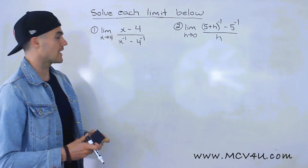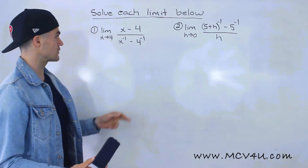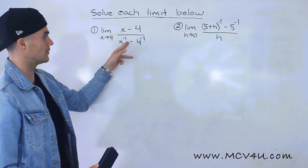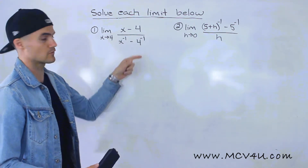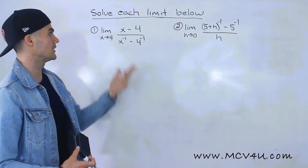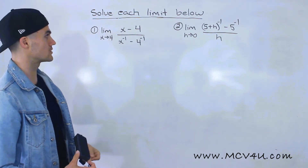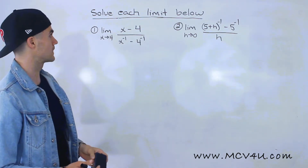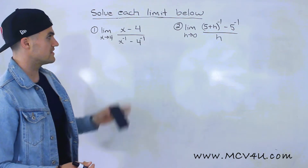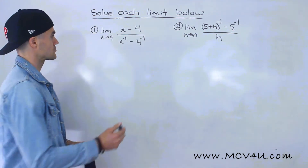Notice that we can't plug in an x value of 4 because if we do, we'll have 4 to the negative 1 minus 4 to the negative 1, which gives us 0. We can't have a denominator of 0. Notice we'll also have 0 in the numerator — 4 minus 4. So with these types of limits, you're going to have to do a little bit of algebra.